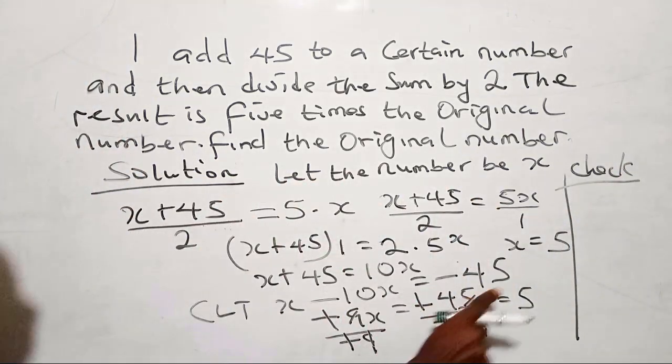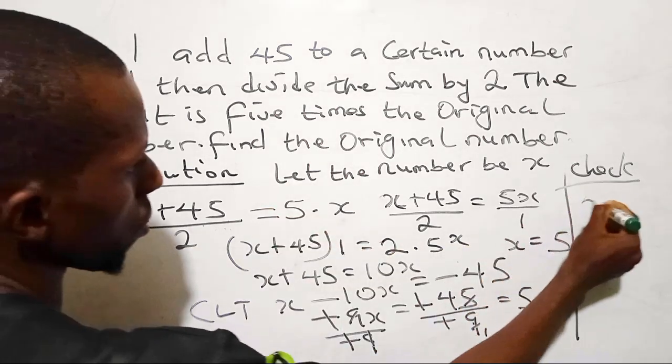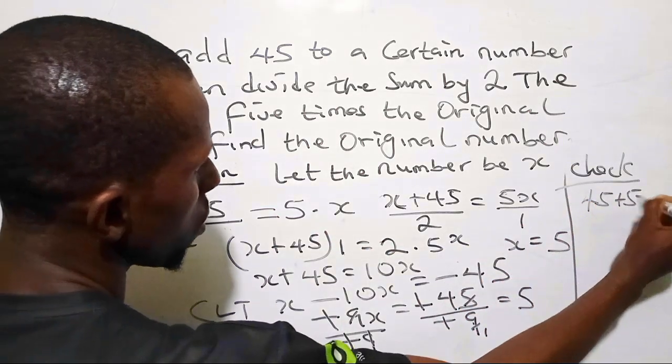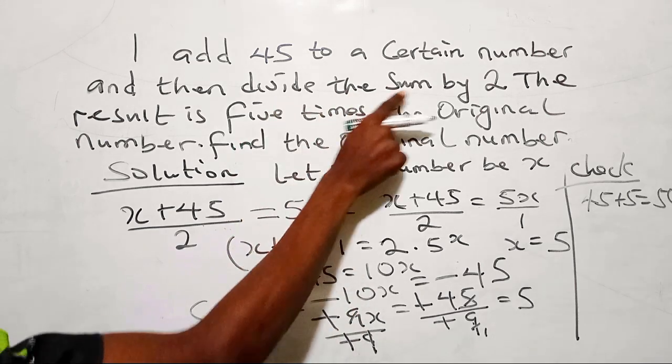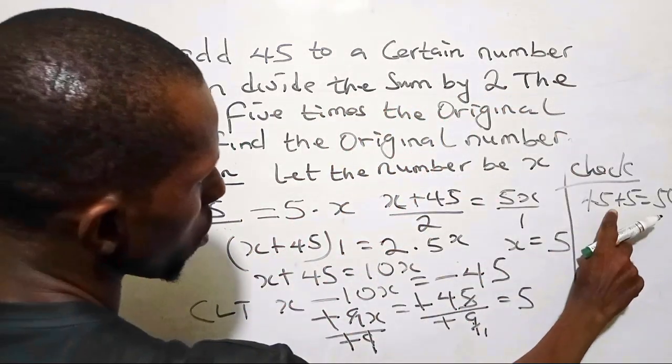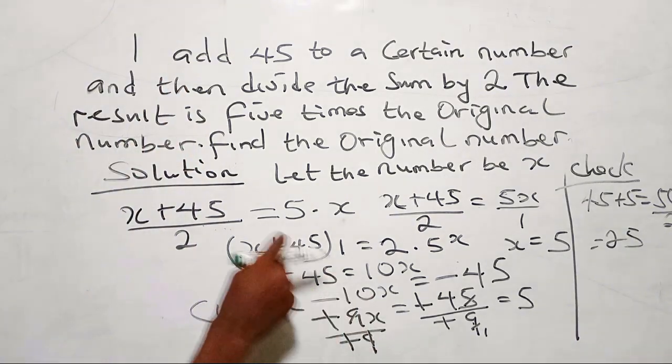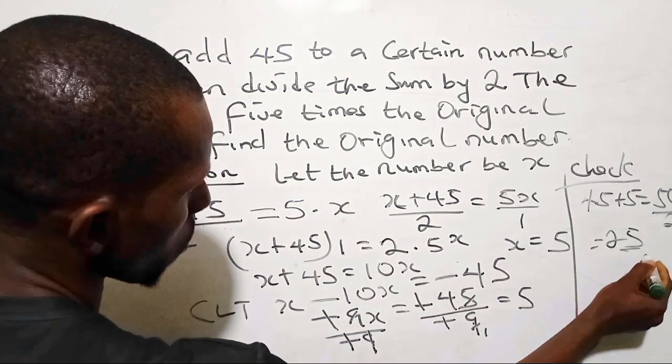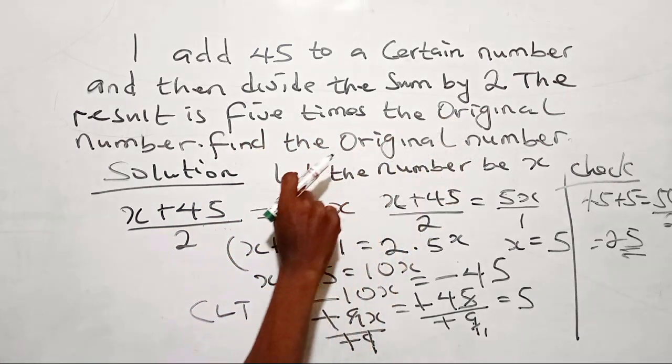So when you say you add 5 to 45, that gives you 50. So you have 50 and you divide the sum by 2. So the sum of this is 50. When you divide it by 2, you have 25. But this result, which is 25, is 5 times the original number.